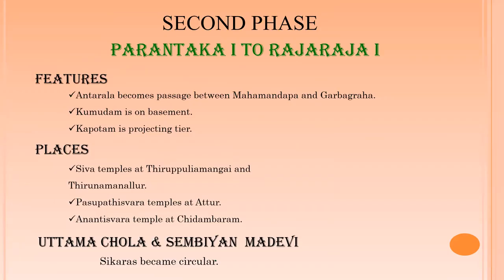The second phase of early Chola architecture spans from Parantaka to Raja Raja I. Features of this phase include: the Antarala becomes a communicating passage between the Mahamandapa and Garbhagriha; Kumbudam is found on the basement; Kapotam starts like a projecting tear; and lion motifs disappeared. Examples include Shiva temples at Tirumanallur, Panjavadishvara temple at Allur, Anandishvara temple at Chidambaram, and Veeranarayana temple at Koil. Uttama Chola and Sembian Mahadevi constructed many temples. The Shikharas became circular during this period.